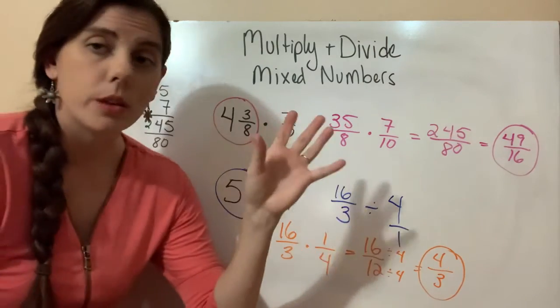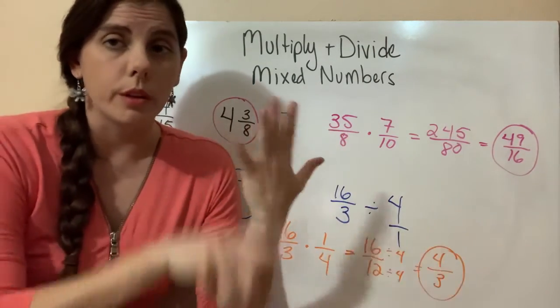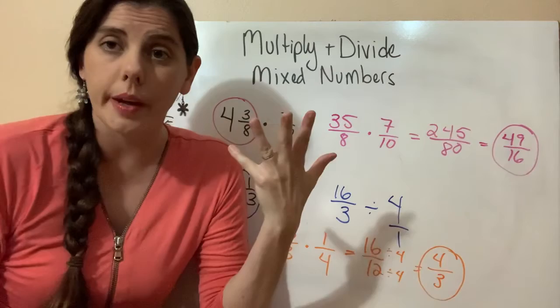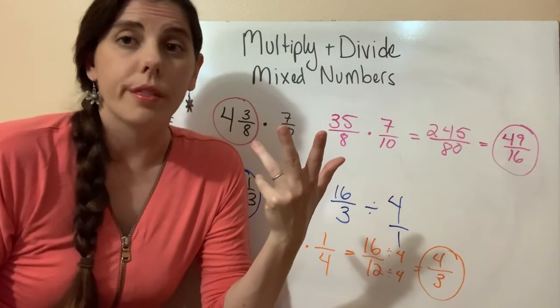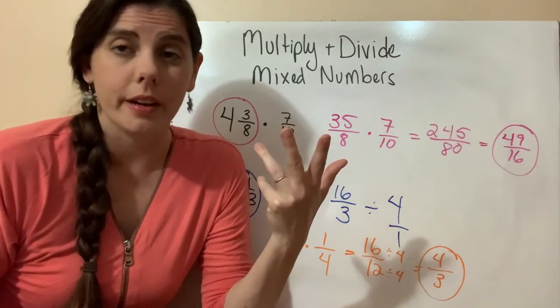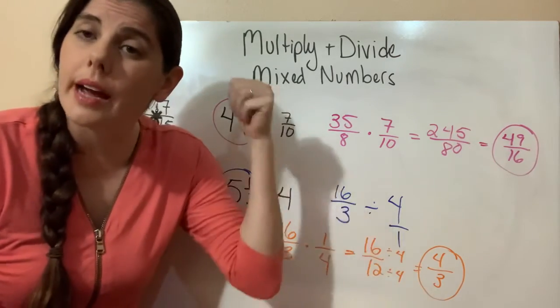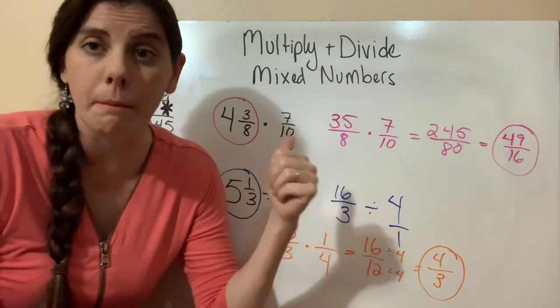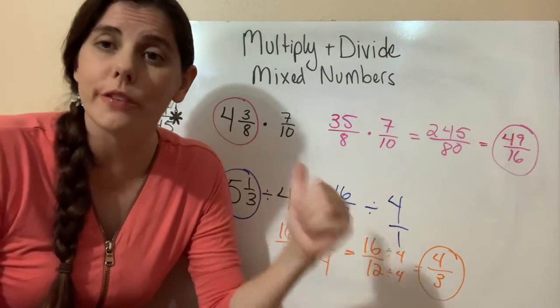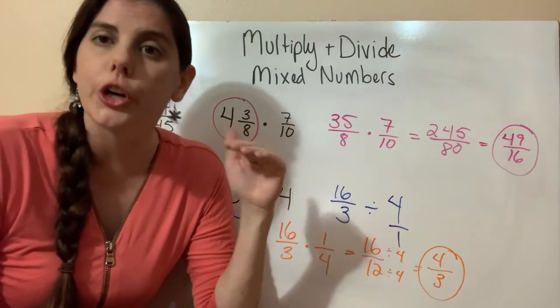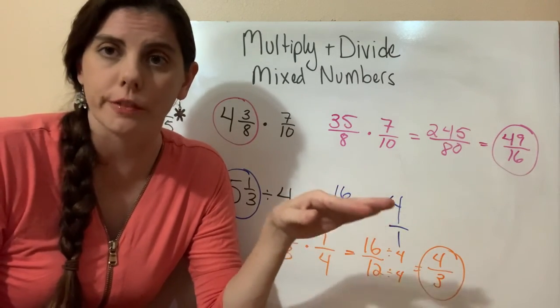So we're still using all the same rules that we learned with integers, with exponents, with fractions, multiplying and dividing fractions. The only thing we're doing now is when we have a mixed number and we're multiplying or dividing it, take that mixed number and turn it into an improper fraction first.